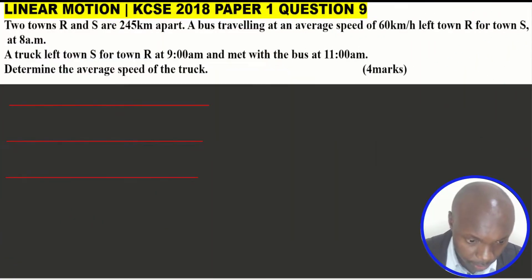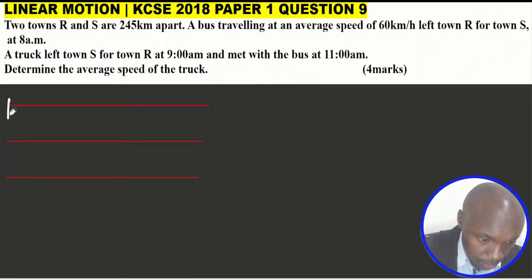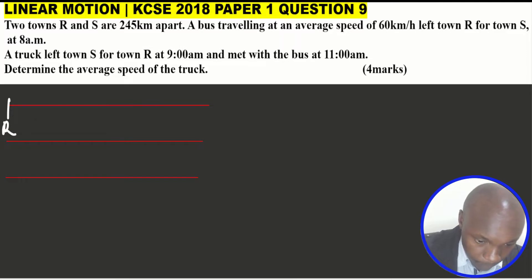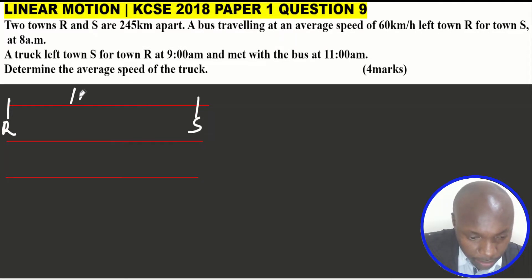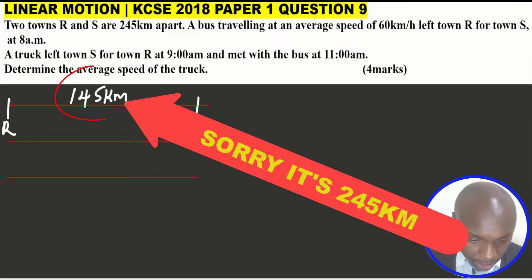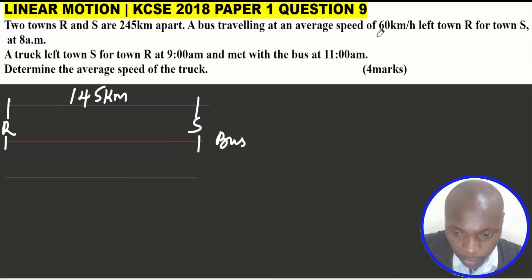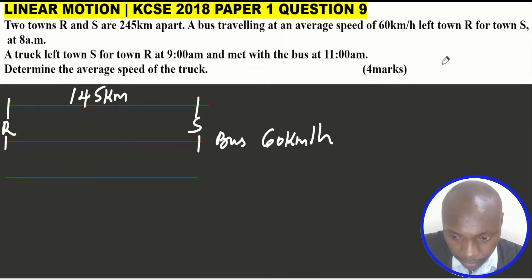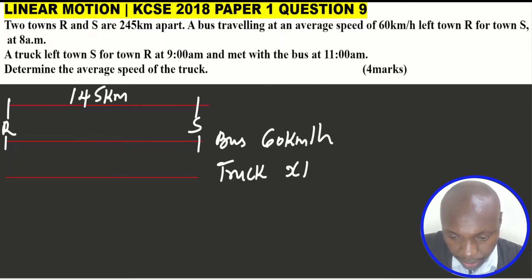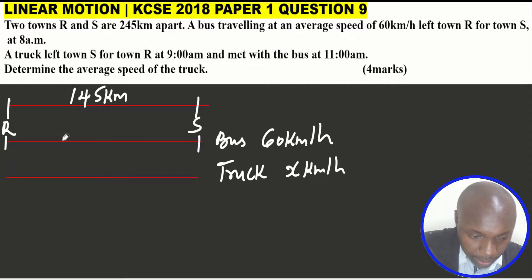Let me indicate on this line the positions of R and S. That is the position R, and position S is there. The distance between them is 245 kilometers. This represents the bus, moving at a speed of 60 kilometers per hour. This is the truck — we don't know the speed of the truck, so we can let it be X kilometers per hour. The bus is moving from R to S, and the truck is moving in the opposite direction.